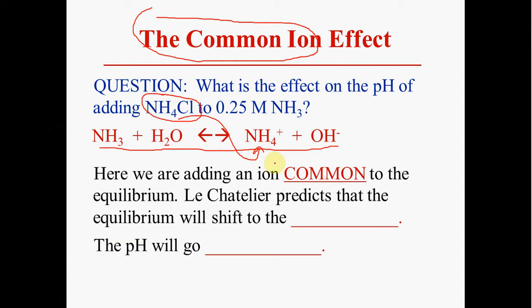If we look at Le Chatelier's principle, adding this ion will shift the equilibrium to the left. That will reduce the amount of hydroxide ion that is formed, so it will reduce the dissociation and the pH will go up as the reaction becomes less basic.